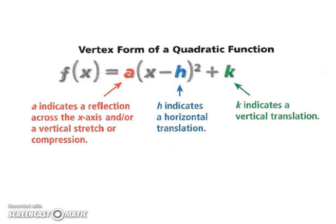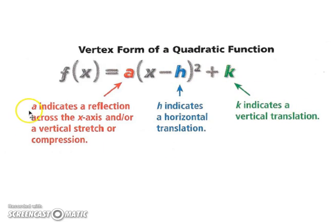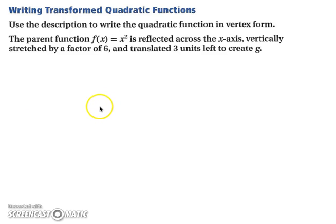Let's look at the vertex form of a quadratic function: f of x equals a times the quantity x minus h squared plus k. Here, h indicates the horizontal translation, k indicates the vertical translation, and a indicates a reflection across the x-axis and/or a vertical stretch or compression. So a has quite a big job.